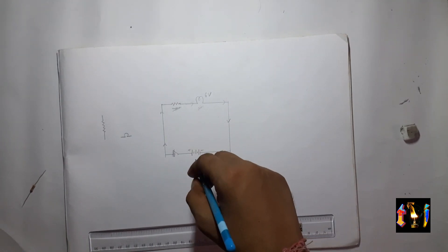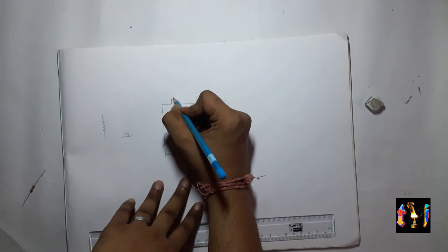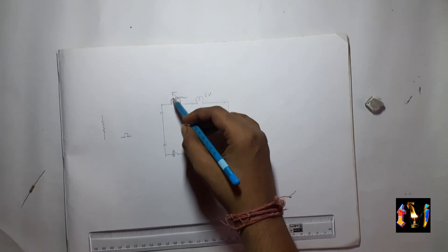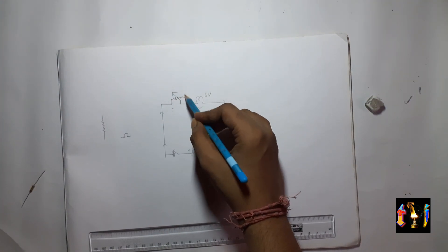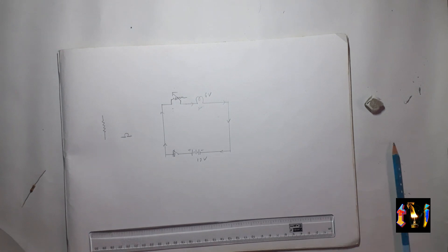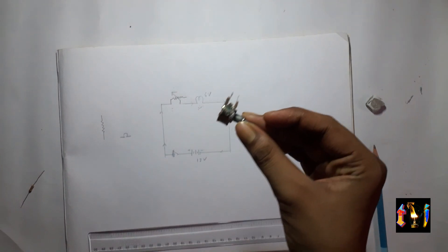There is another type of resistor which is known as the variable resistor which looks like this. So this is how the variable resistor is denoted in a circuit diagram and in the real world it looks like this.